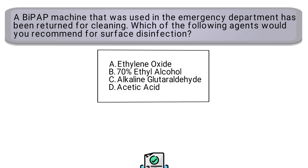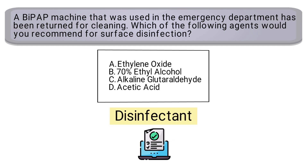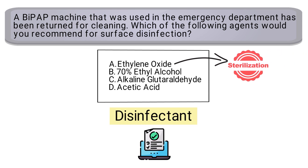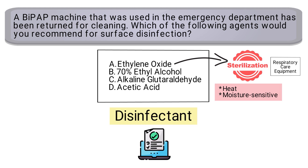To get this one correct, you needed to know which substance in the answer choices can be used as a disinfectant. The first answer choice, ethylene oxide, is used for sterilization in heat or moisture sensitive items such as plastics in respiratory care equipment. We're looking for a method of disinfection, not sterilization, so we can rule out A.